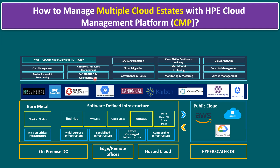HPE CMP supports automation and orchestration with Ansible, Chef, Puppet, and VMware vRealize Orchestrator. There is also SaaS aggregation, cloud migration from on-premises to public cloud and vice versa, governance and policy, and cloud-native continuous delivery using CI/CD pipelines like Argo CD or OpenShift Pipelines. Multi-cloud brokering, monitoring, and metering are also included within the HPE CMP.